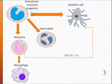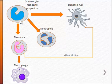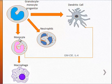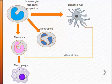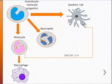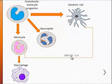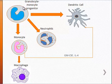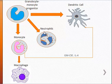The granulocyte-monocyte progenitor has the ability to differentiate into a monocyte, which circulates in the blood. When the monocyte goes into the tissue, it further differentiates into a macrophage. This monocyte also has the ability to become a dendritic cell under the influence of GM-CSF and interleukin-4. The granulocyte-monocyte progenitor also differentiates into neutrophils, which are our most common white blood cell - around 60% of circulating white blood cells.